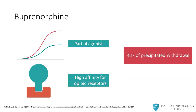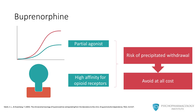When you combine these two concepts — that buprenorphine is a partial agonist and has high affinity at the opioid receptors — there is a possibility for precipitated withdrawal. During buprenorphine treatment, this is the most concerning adverse event that has to be avoided at all costs.